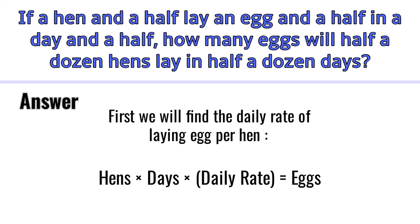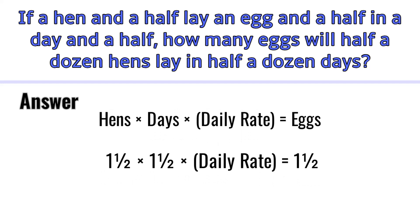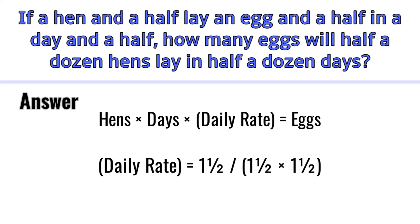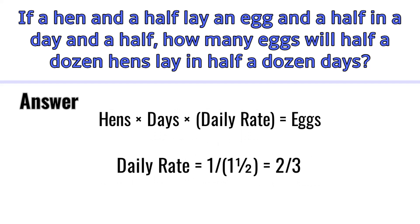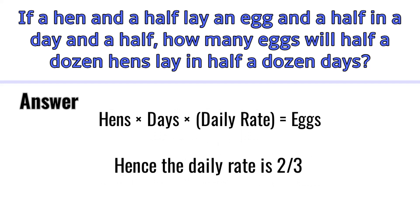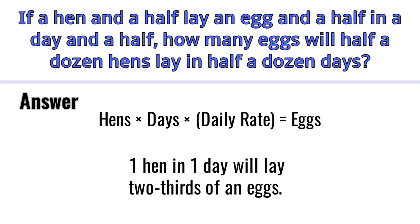The formula is: hens multiplied by days multiplied by daily rate equals eggs. In the current scenario, 1.5 hens × 1.5 days × daily rate = 1.5 eggs. So the daily rate works out to 2/3. That means one hen in one day will lay two-thirds of an egg.